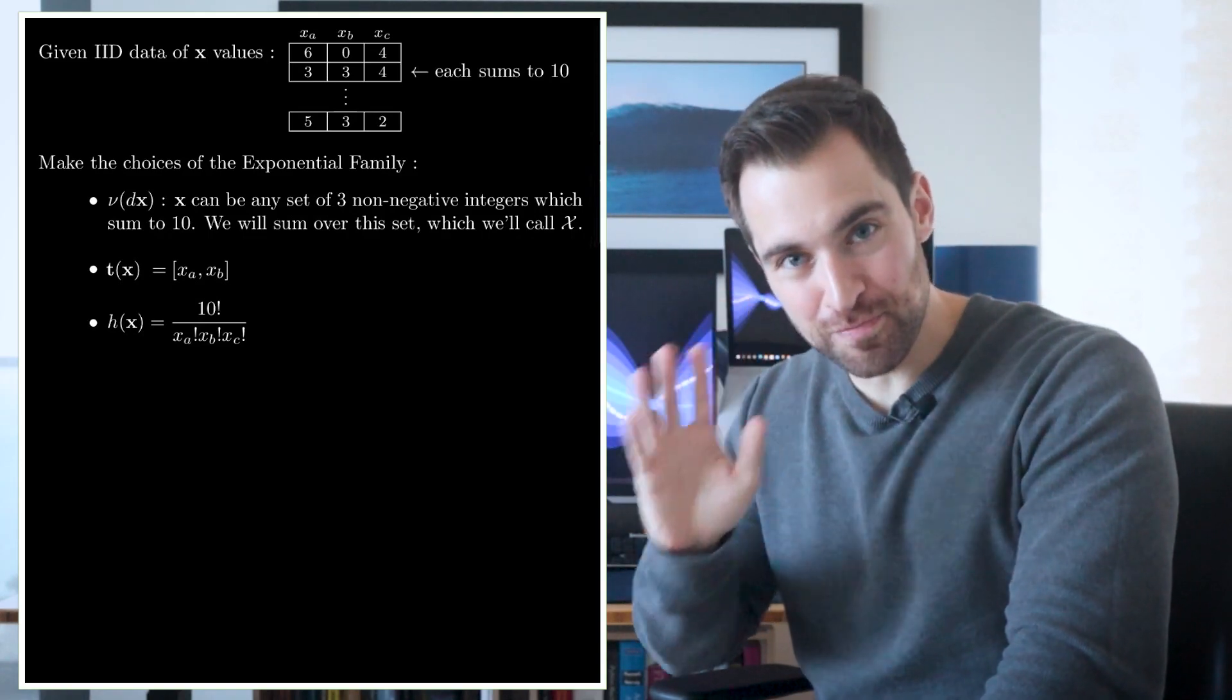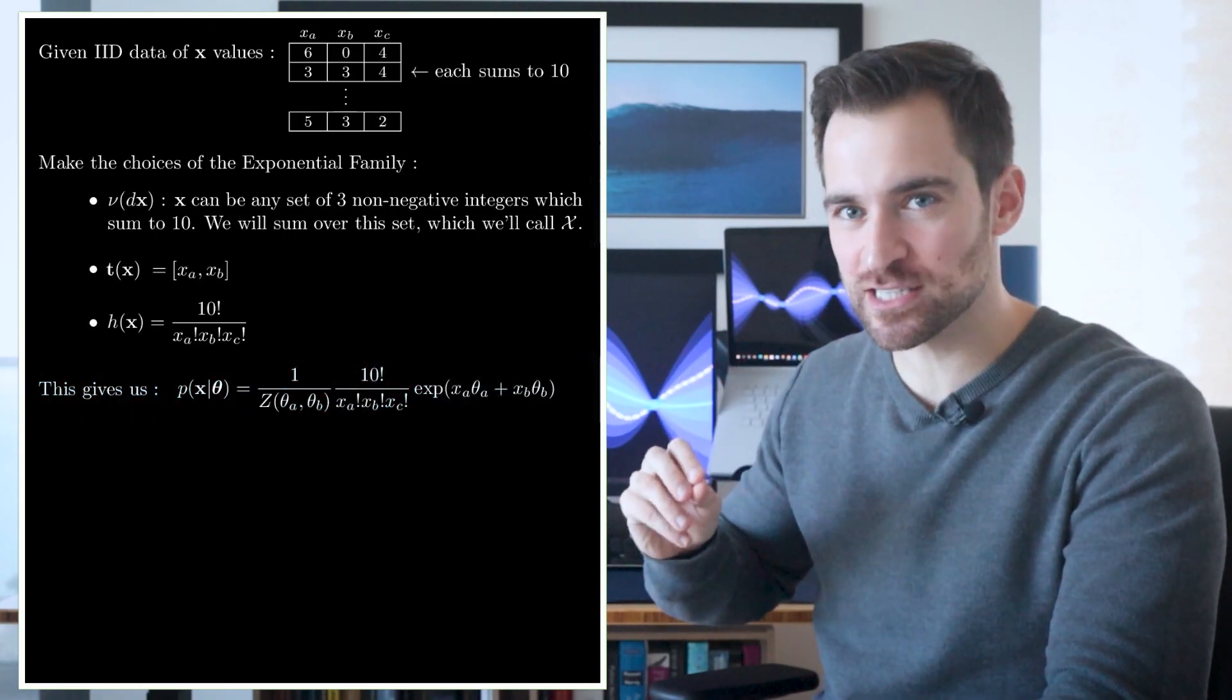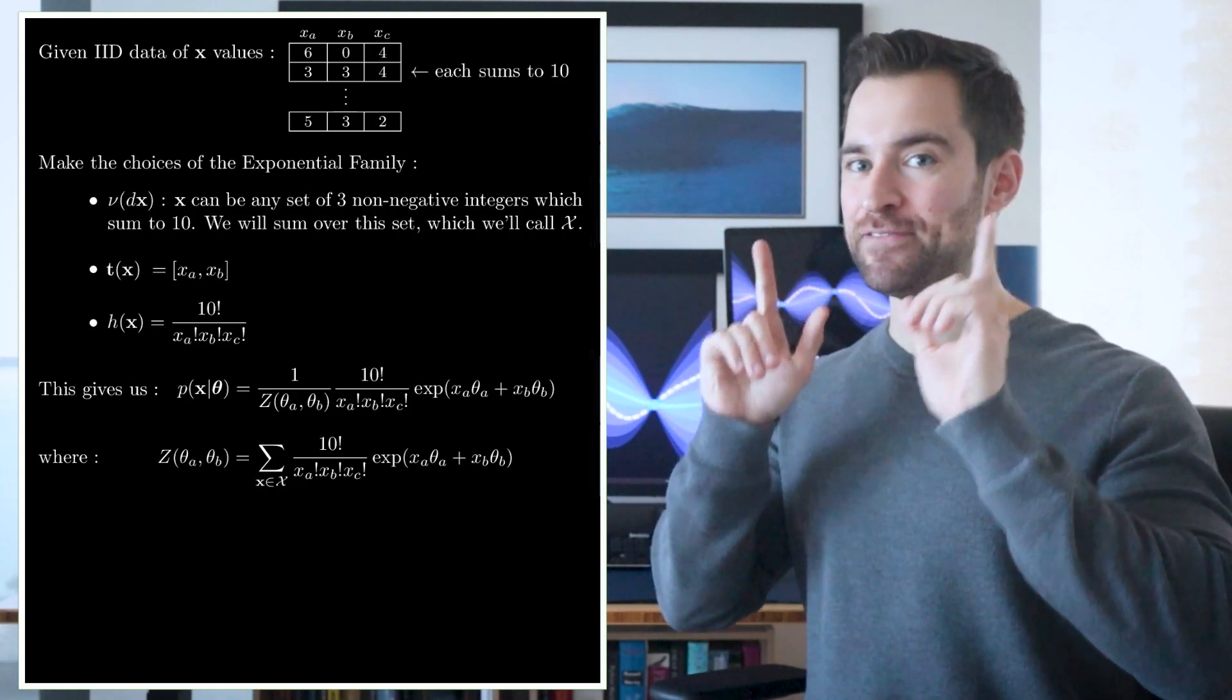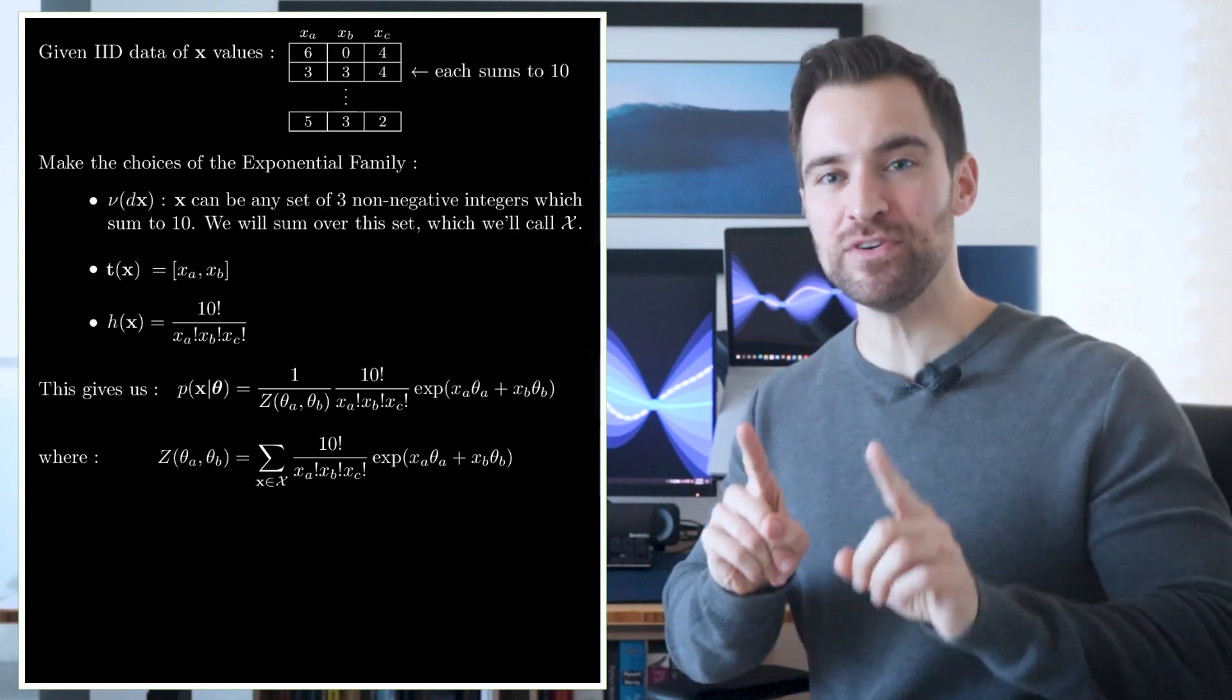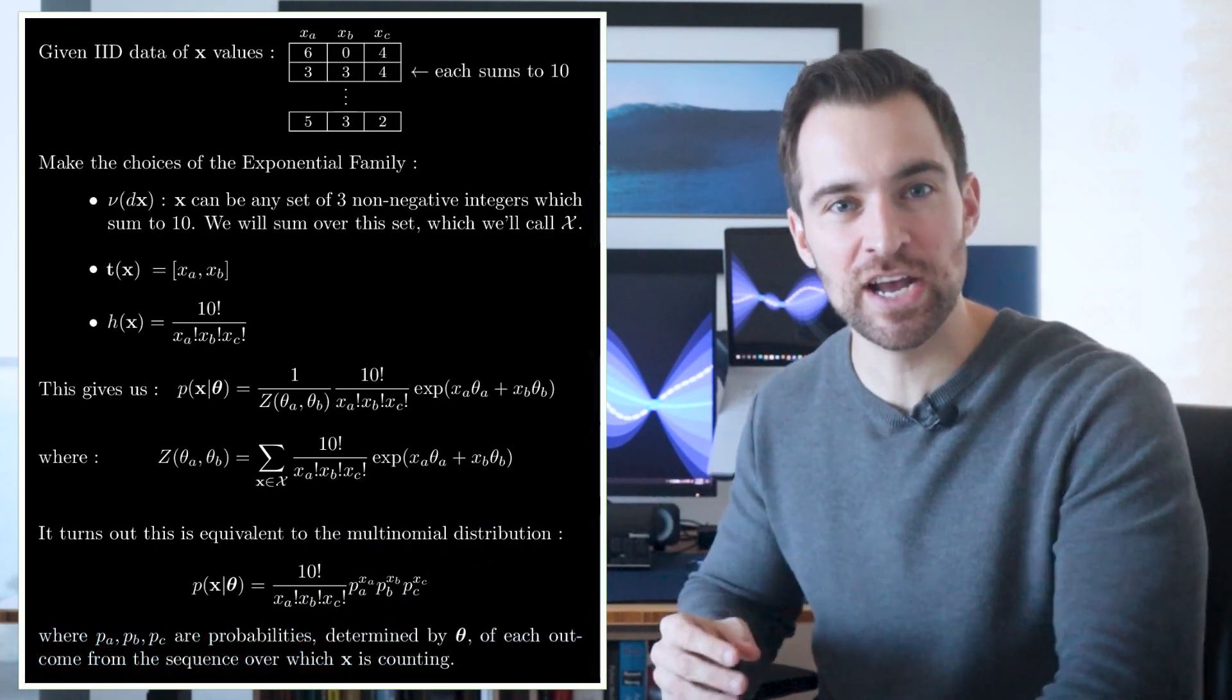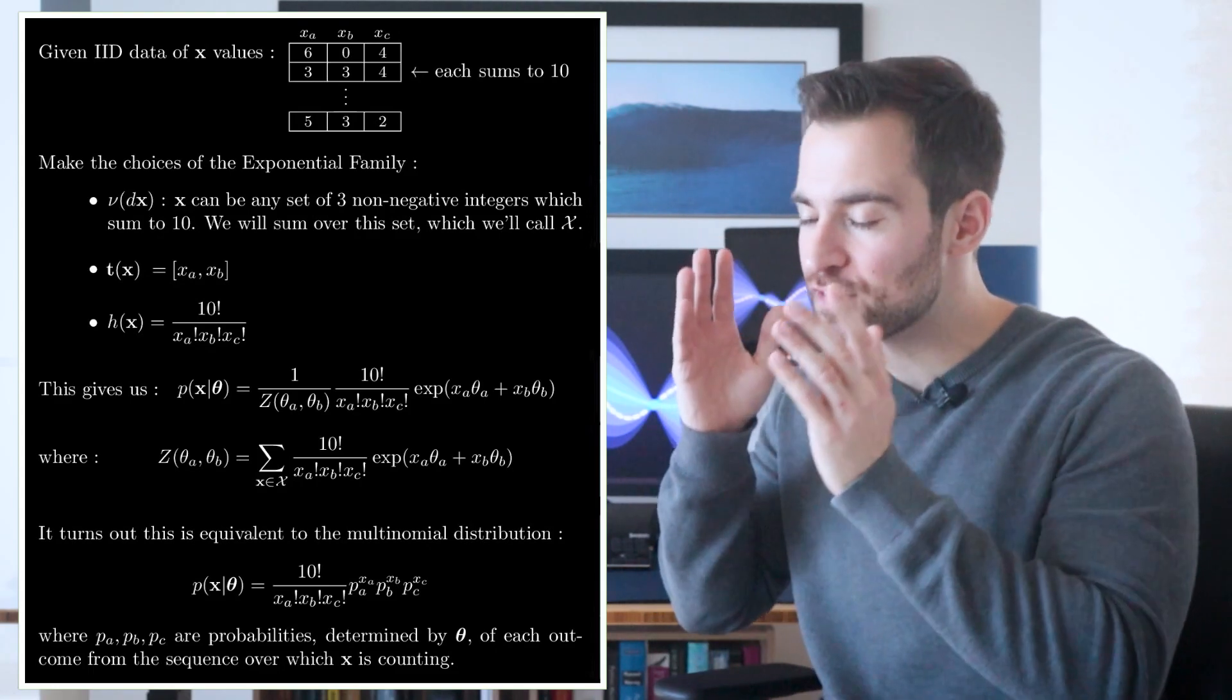So it seems in the latter case, x is more likely. Therefore, making h of x count the number of sequences that could produce x is a reasonable choice. And that turns out to be this function. Okay, so we've made all our choices. Now let's just follow through and see what we get. If we plug things in, we get this expression, where the normalizer is given by this. Notice, it's summing over all possible x's. Now, if this form looks unusual, that makes sense. It is indeed unusual looking. But let me reassure you, it turns out you can rewrite it into this form, which is the multinomial distribution. Here, each p gives the probability of a, b, or c within the sequences we showed. As you can imagine, they are determined by theta. So we see, reasonable choices lead us to another familiar distribution.